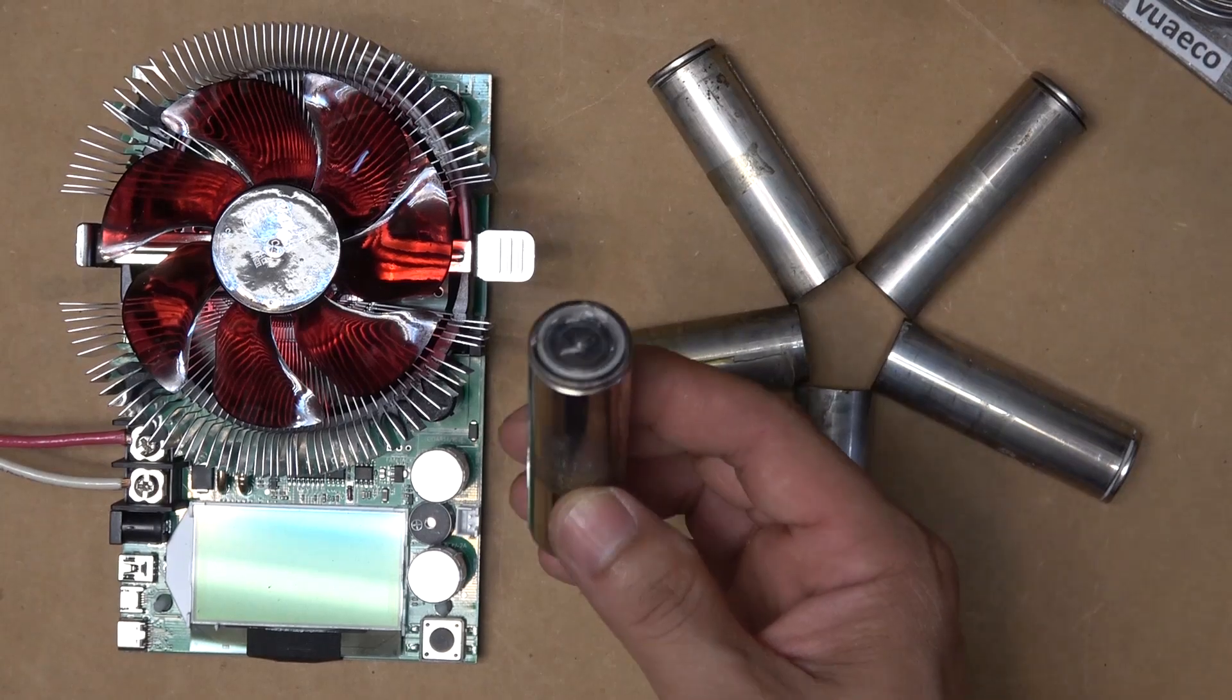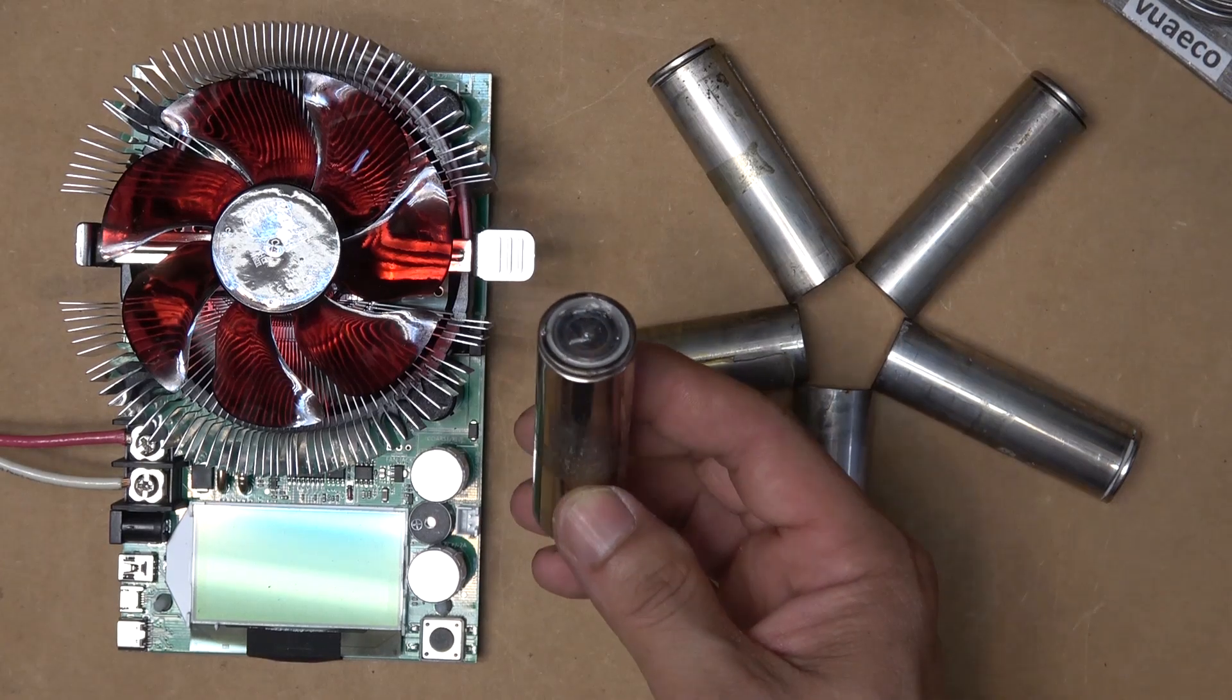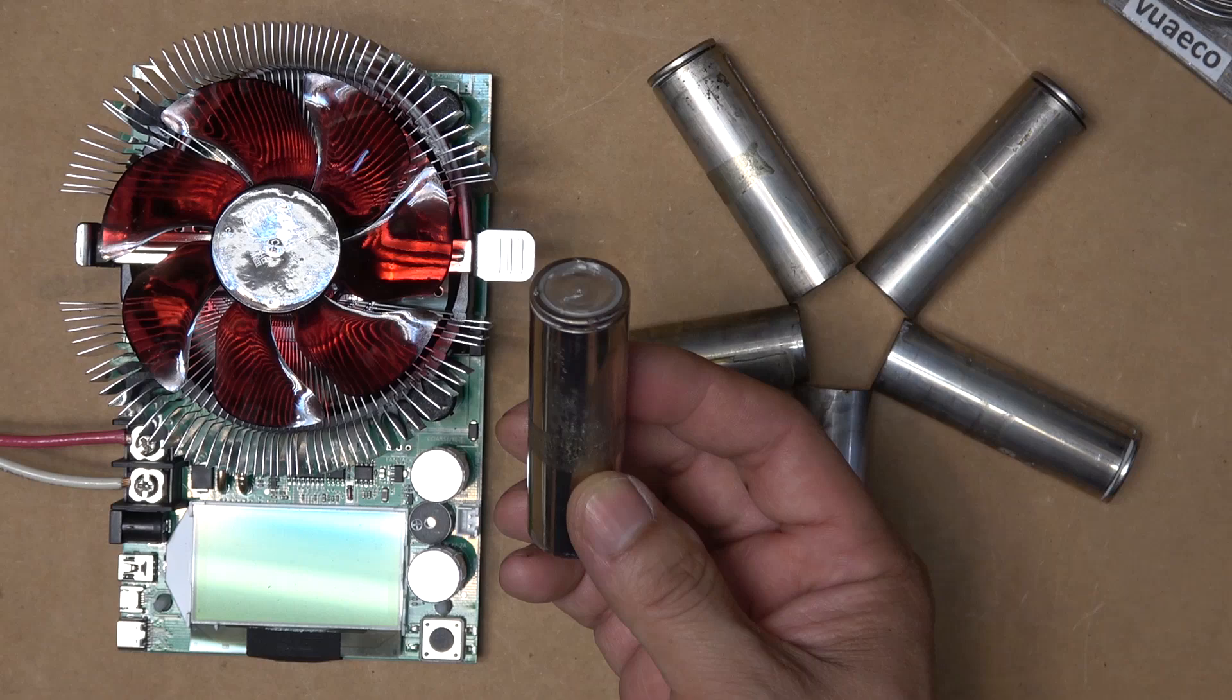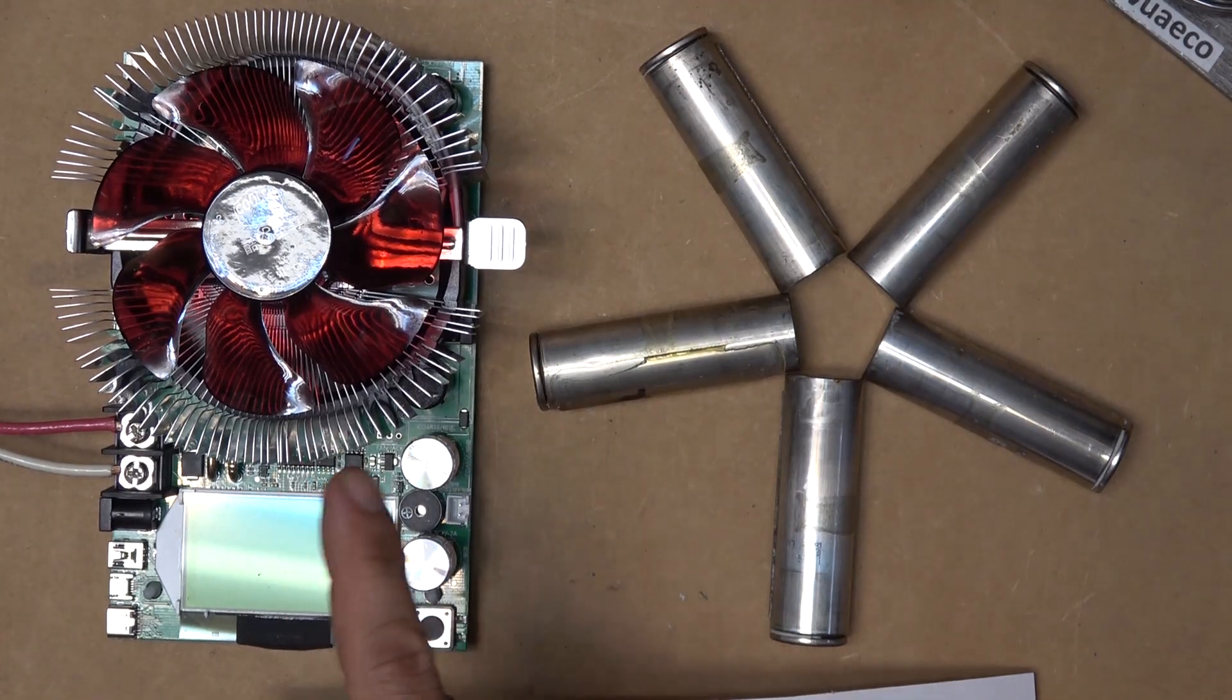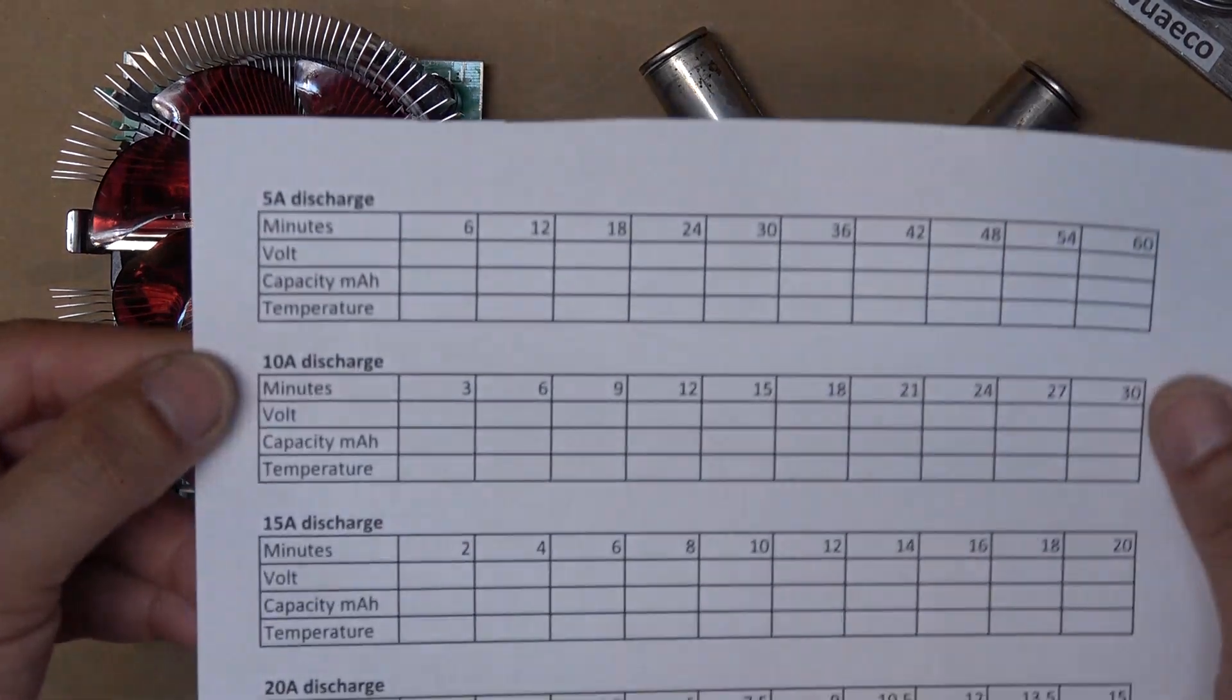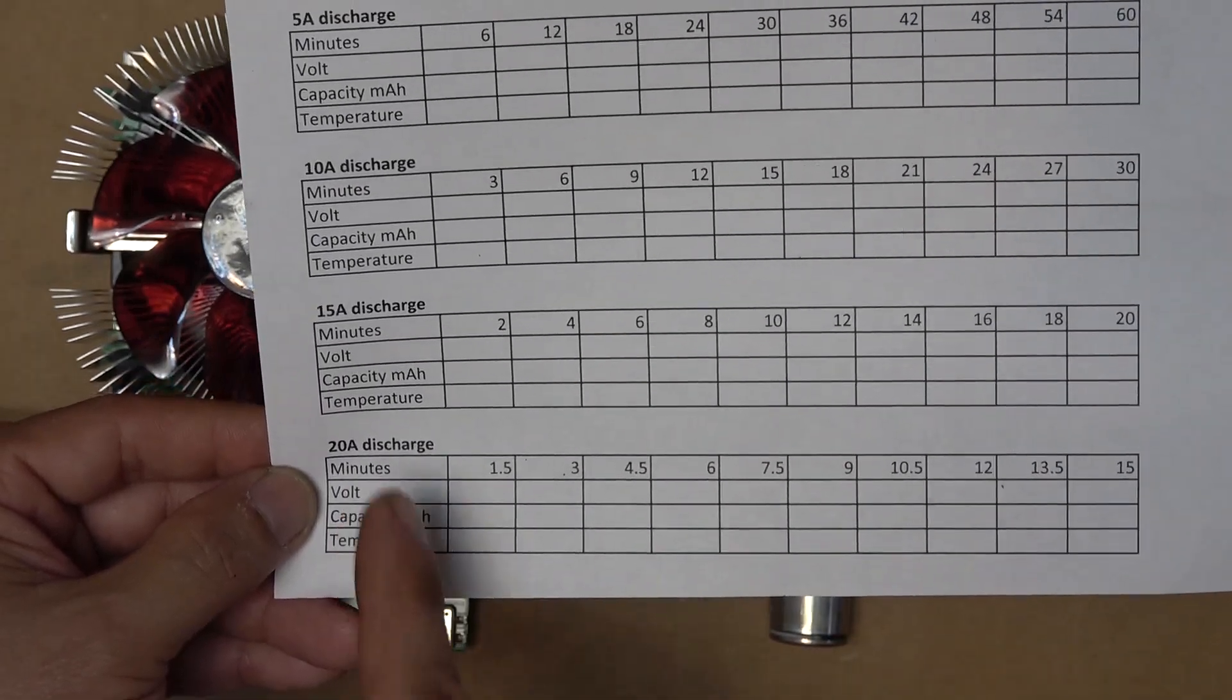The very first and most important information you need to know before you build any battery pack is how many amps you can discharge this battery before it heats up too much and destroys itself. For this test I'm going to use a constant current discharge tester that can go up to 20 amps maximum. My test is going to be 5 amps, 10 amps, 15 amps and 20 amps, if I can get there.